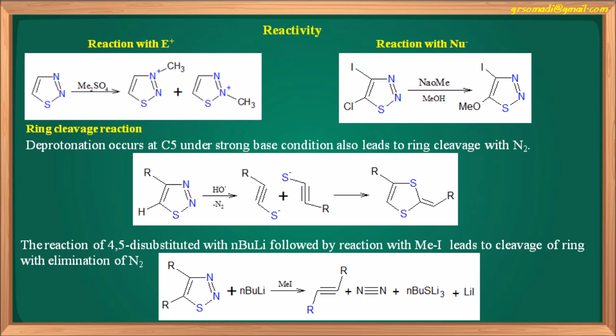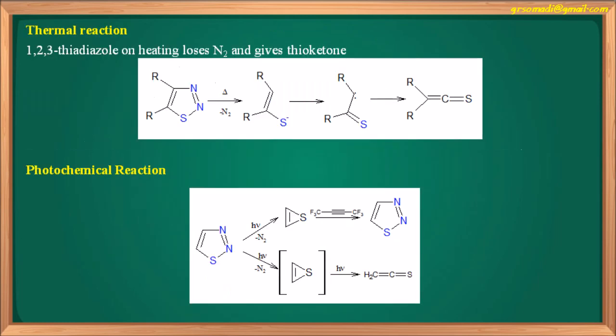Properties of 1,2,3-thiadiazoles: reaction with electrophile — methyl substitution occurs on nitrogen-2 or nitrogen-3 positions. Reaction with nucleophile — methoxy group substituted at C5. In ring cleavage, deprotonation occurs at C5; under strong base conditions this leads to ring cleavage at N2 with rearrangement involving a dithio group. Reaction of 4,5-disubstituted compound with n-butyllithium followed by methyl iodide leads to ring cleavage with elimination of nitrogen gas. Thermal and photochemical reactions are also important properties.